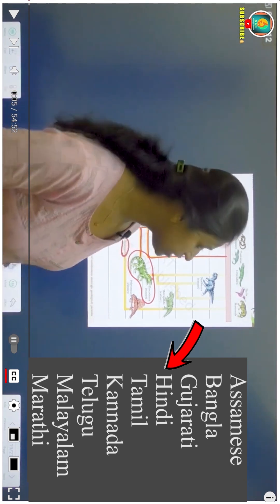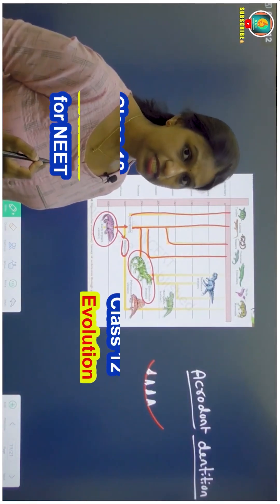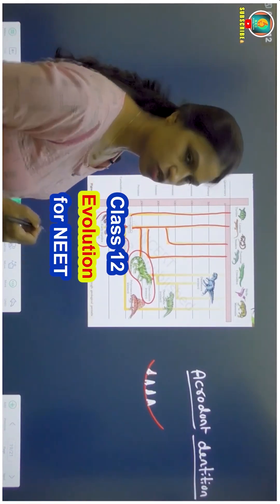Such type of dentition is called acrodont dentition, but in our case it is thicodont dentition. Thicodont means